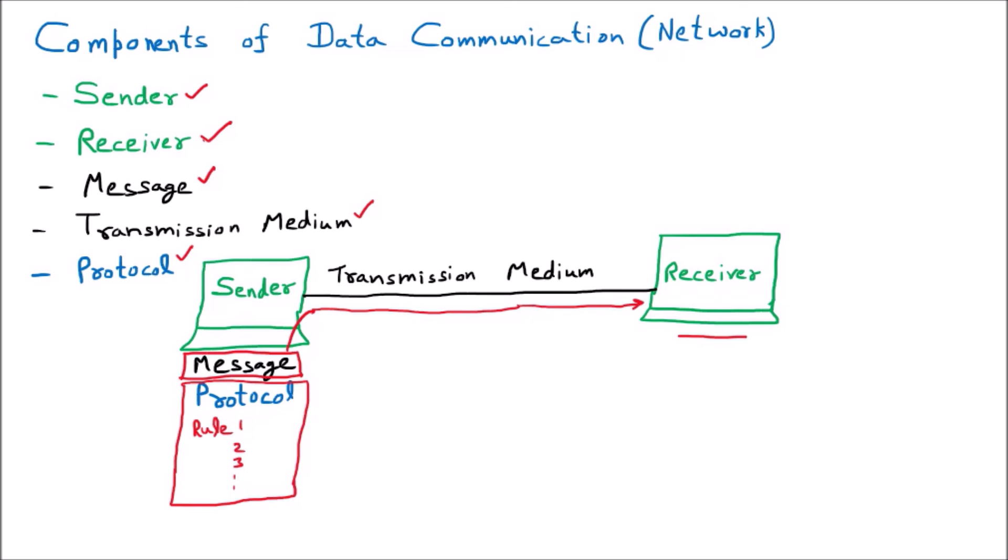For example, the agreement between you and me is Microsoft Teams. We have the agreement that the lecture will be one hour, you have to pay attention, I will communicate in English, I will upload the assignment and you will download it. That is the agreement between us — those are the protocols we follow. So these are the five components of data communication used for sending data.